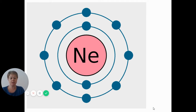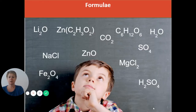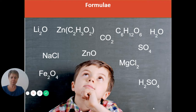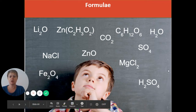Chemical formulae are the way that scientists write down the names of chemicals using the chemical symbols from the periodic table, but also using numbers to show the ratio of the different types of atoms in that chemical. The first thing to know is that you can immediately tell how many different types of elements there are.